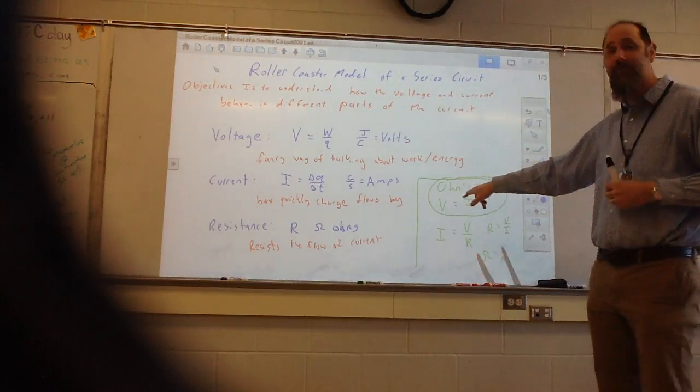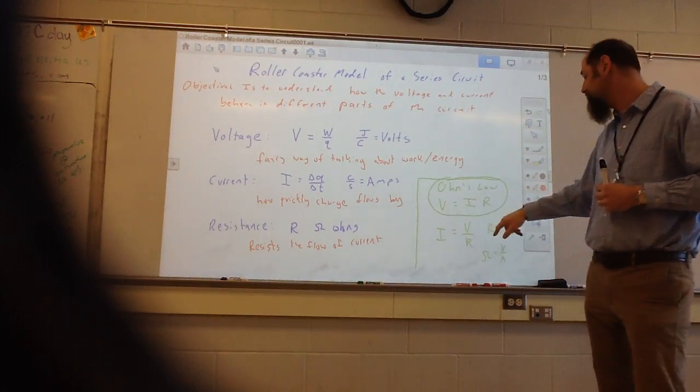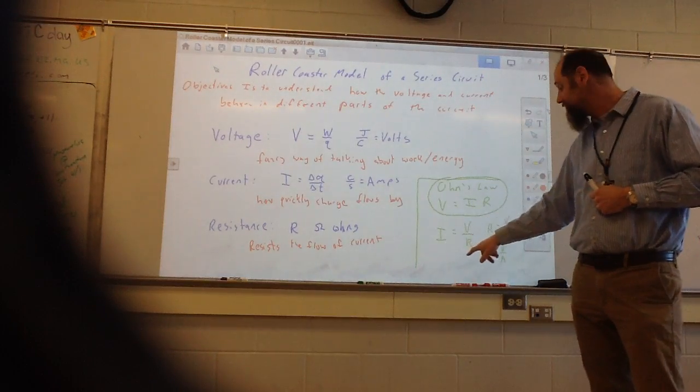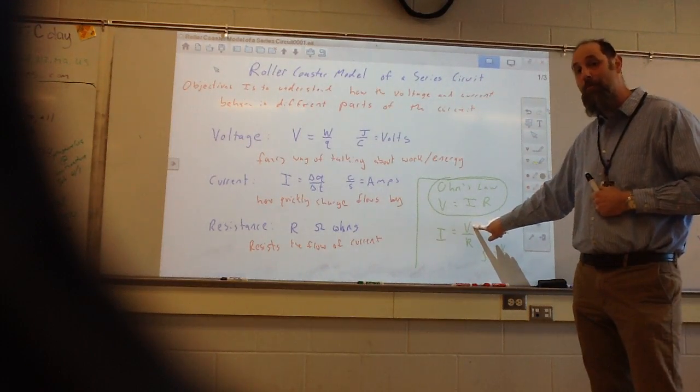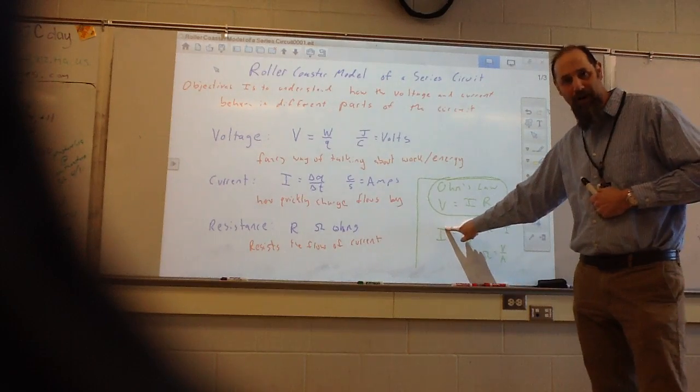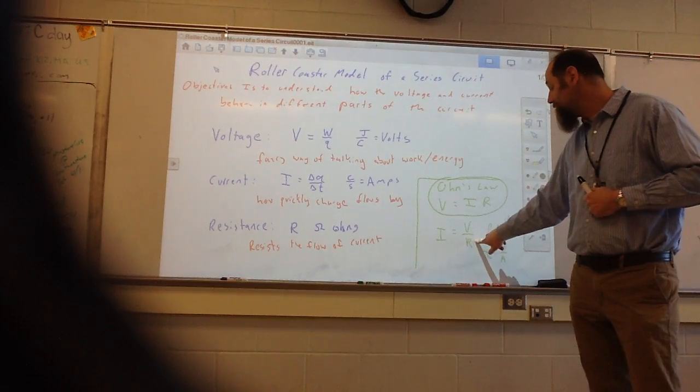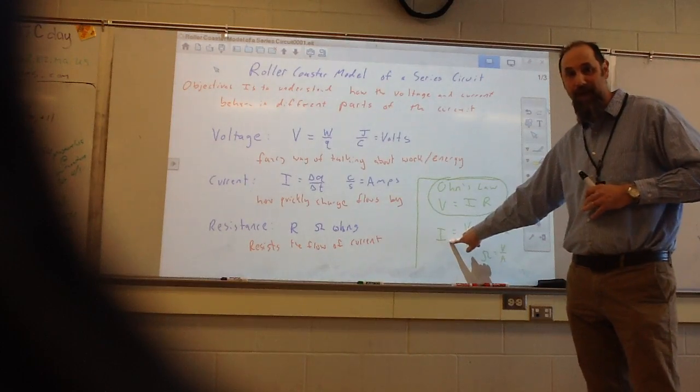So from Ohm's law, voltage equals current times resistance. If we solve for I, we kind of look at it as the more work or energy we're putting into the system, the more current we get out of it, and the more resistance we have, the less current we get.